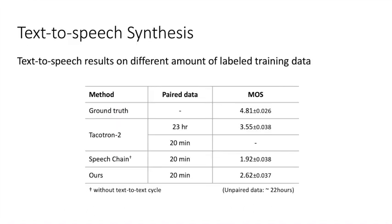For the text-to-speech experiment, we compare our model with Tacotron 2 and Speech Chain. Speech Chain is a dual learning framework for speech recognition and text-to-speech where the two modules do not share representations.